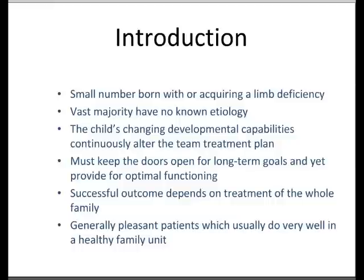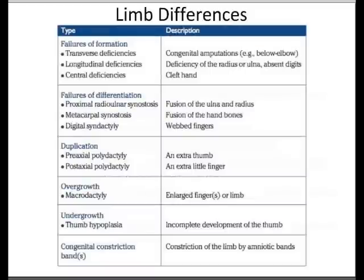In terms of limb differences, there are several types. They can be failures of formation, failures of differentiation, duplication, overgrowth or undergrowth, or congenital constriction bands. I'll deal with a couple of these as we go along.